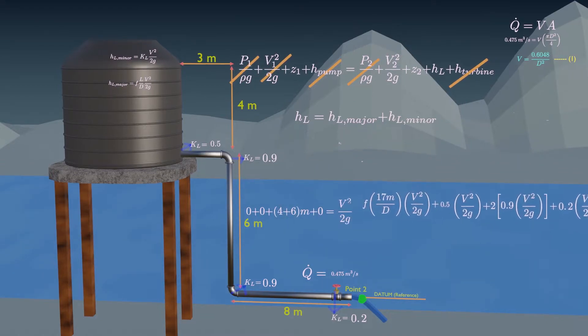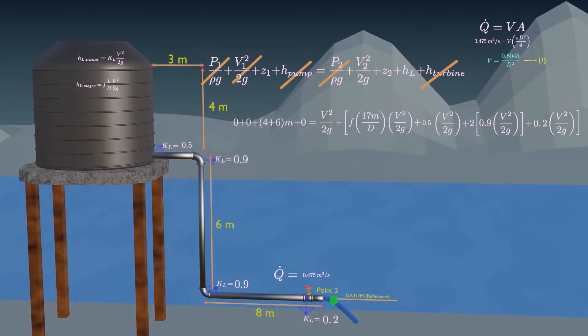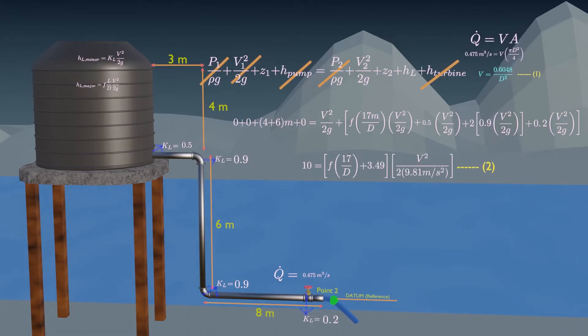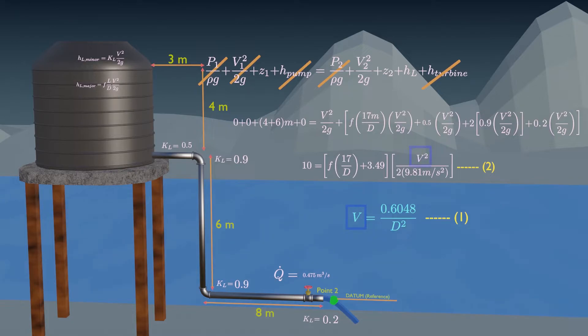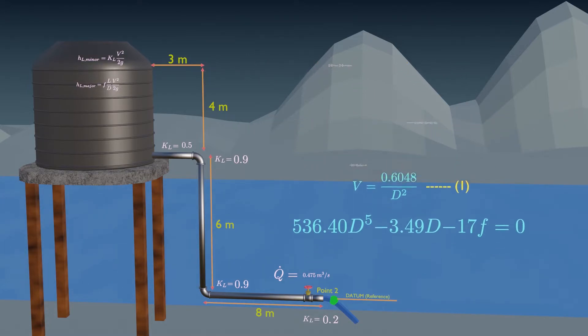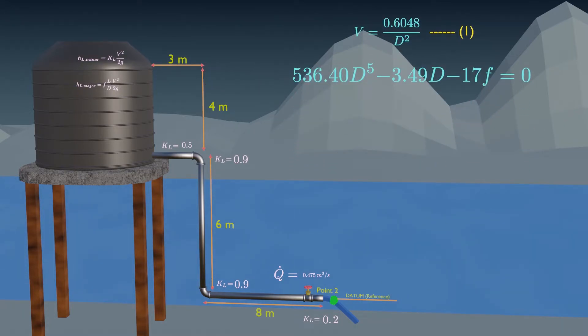Now solve these energy equation. Combine equation 1 and 2 by eliminating velocity, we will obtain. Now, if you assume laminar flow, then you can solve this equation by using the friction factor as.